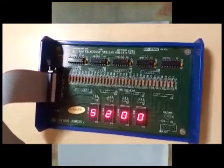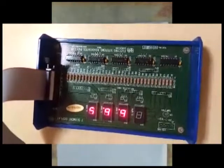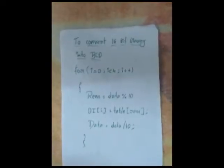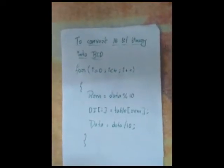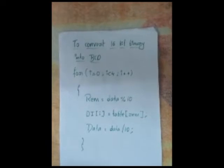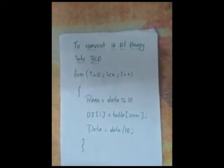It seems simple, but how to do it? To convert 16-bit binary into BCD we know that there are 4 decimal numbers that will be stored in data. We just have to take the modulus of data with 10 and divide the data by 10. Hence we get each decimal digit as the BCD. This will be continued four times to get four decimal numbers.